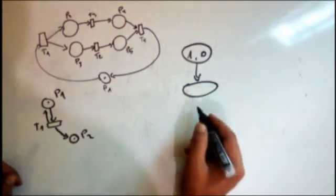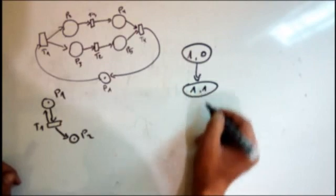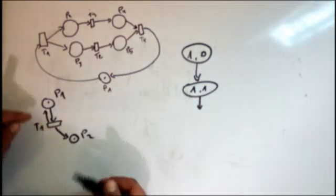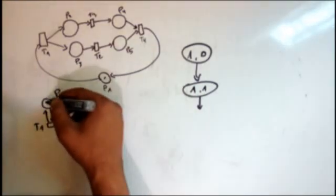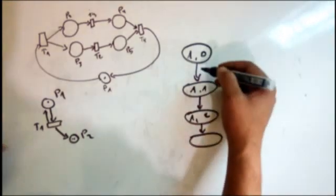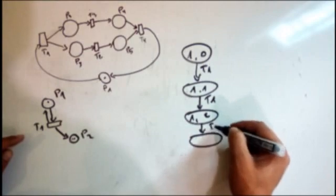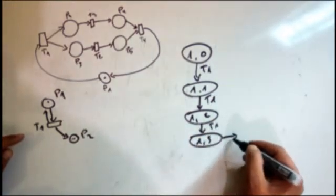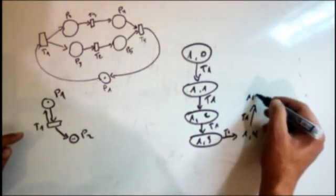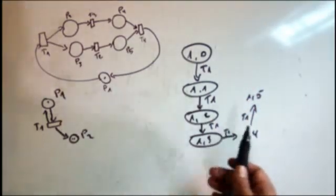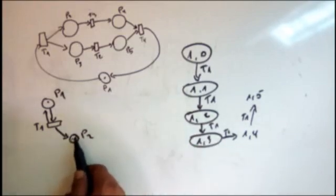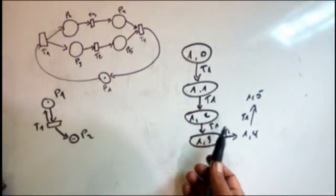After firing T1 we get (1,1). From this marking we can fire T1 again — we remove the token from p1 and add one to p1 and one to p2, giving (1,2). We can keep firing T1: (1,3), (1,4), (1,5)... This coverability graph will never end — we always just keep adding tokens to p2. In the next video I will talk about this problem and how we can deal with it.